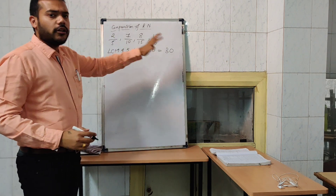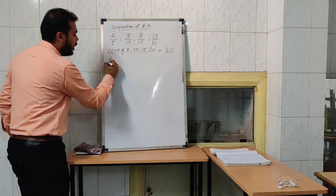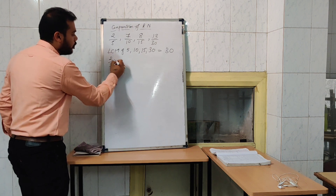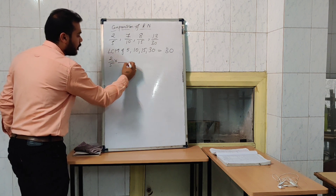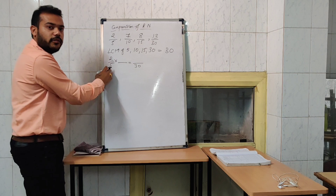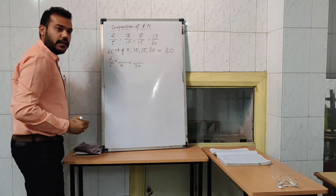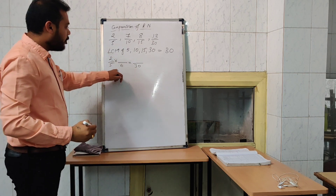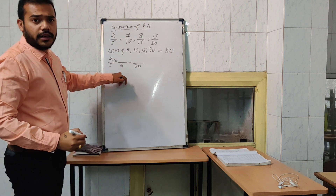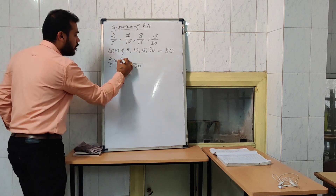Now make the common denominator as 30. Just like an equivalent fraction — for 2 by 5, what do we multiply on 5 to make it 30? That is 6. If we are multiplying on the denominator, then we have to multiply in the numerator also.